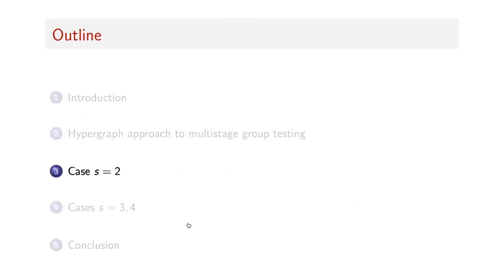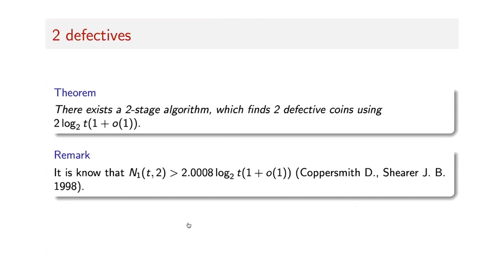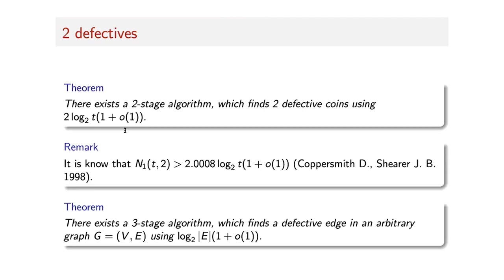We describe how we solve the problem for S equals 2. We want to prove the theorem that there exists a two-stage algorithm which finds two defective coins using two binary logarithms of T tests. It is known that for two coins it is impossible to find them with two logarithms of T tests using only non-adaptive algorithms. Also, there exists a three-stage algorithm which finds a defective edge in an arbitrary graph using an optimal number of tests — binary logarithm of the number of edges — which is optimal by information-theoretic arguments. So for an arbitrary graph we need three stages instead of two.